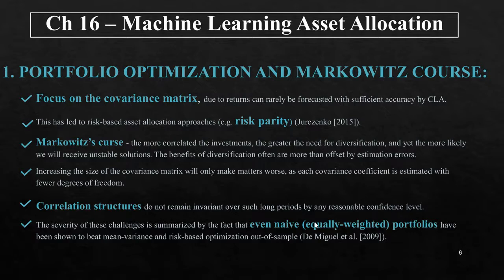So what is Markowitz's curse? The more correlated the investments, the greater the need for diversification, and yet the more likely we will receive unstable solutions. The benefits of diversification are often more than offset by estimation errors. Increasing the size of the covariance matrix will only make matters worse, as each covariance coefficient is estimated with fewer degrees of freedom. Correlation structures do not remain invariant over long periods by any reasonable confidence level, and even naive portfolios have been shown to beat mean-variance and risk-based optimization out of sample.